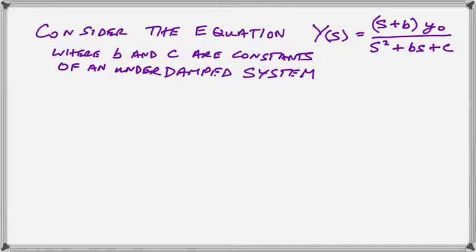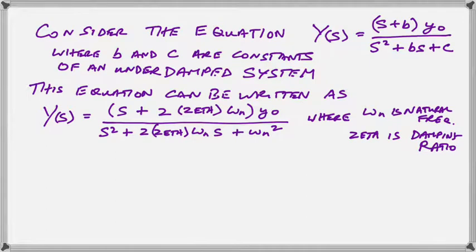The first thing we need to do is to realize that we can rewrite this equation. Study it carefully. We have replaced B with 2 zeta omega n and we have replaced C with omega n squared, where omega n is the natural resonant frequency and zeta is the damping ratio. The reason for these choices will become obvious in a minute, but it makes perfect sense to do this because these are the two constraining parameters of control problems written in this form.